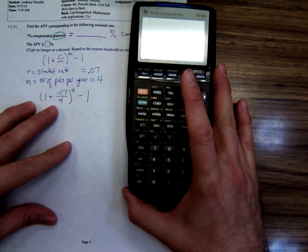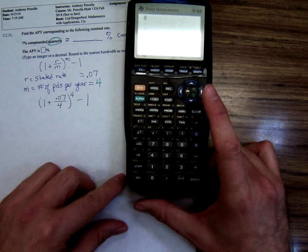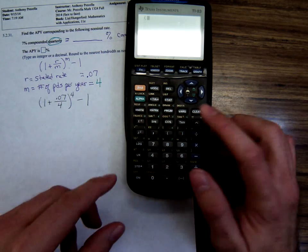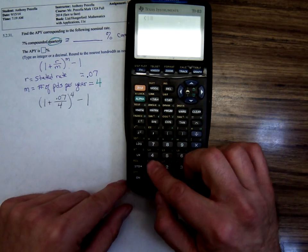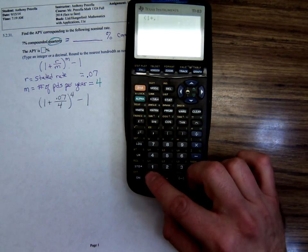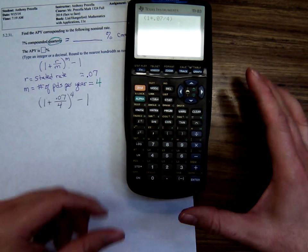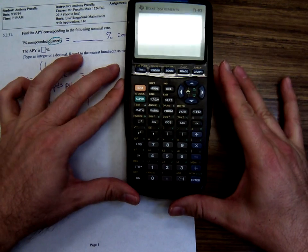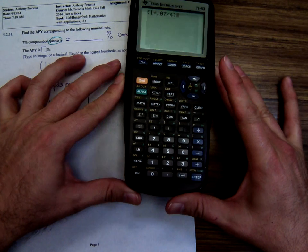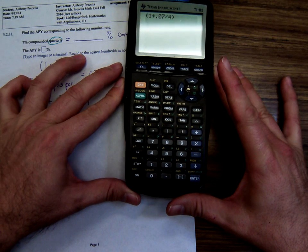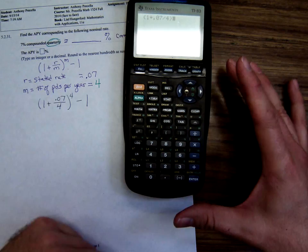We're just going to go ahead. I'll hit parentheses, 1 plus .07 divided by 4, close parentheses. Oh, y'all can see it? Yes. Y'all are way too patient for all of this.